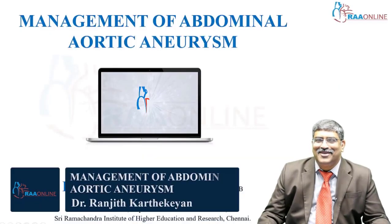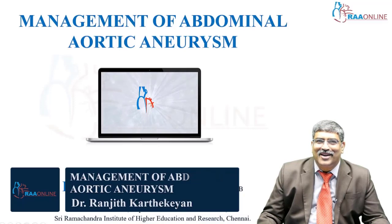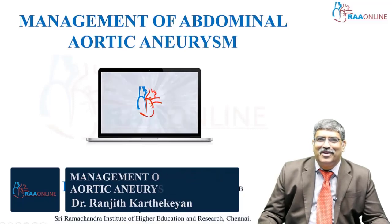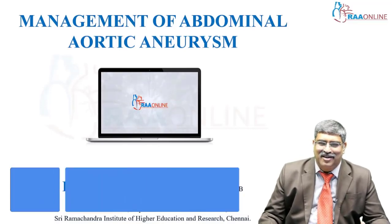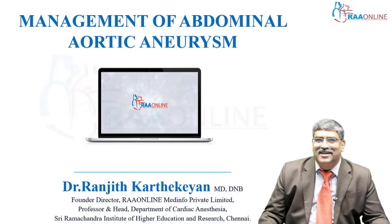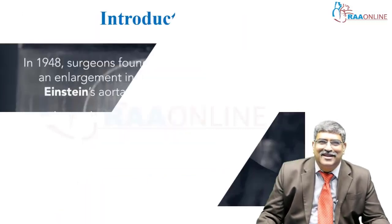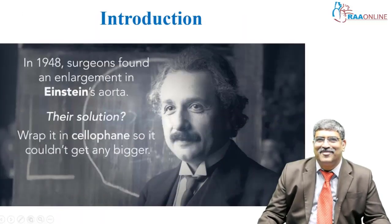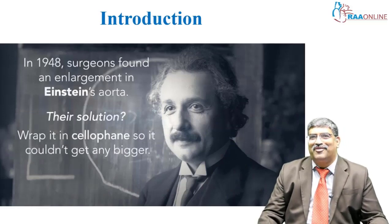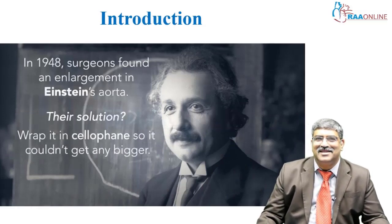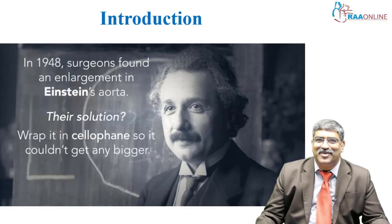Welcome to RAO Online. Today we are going to deal with one important vascular pathology — abdominal aortic aneurysm. Coming to the history, the most intelligent man of the 19th century, Einstein, had a very good relationship with abdominal aortic aneurysm.